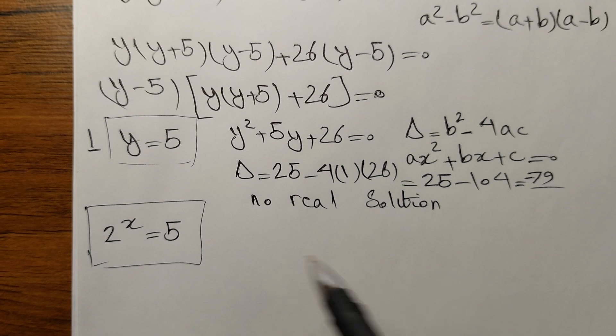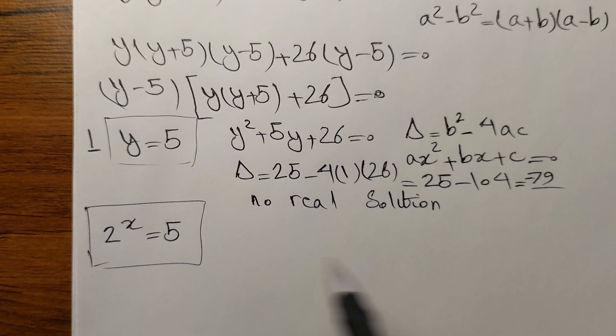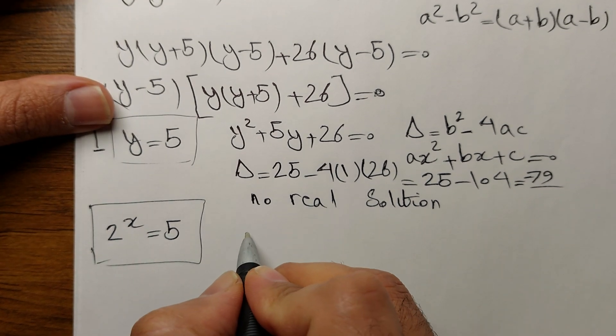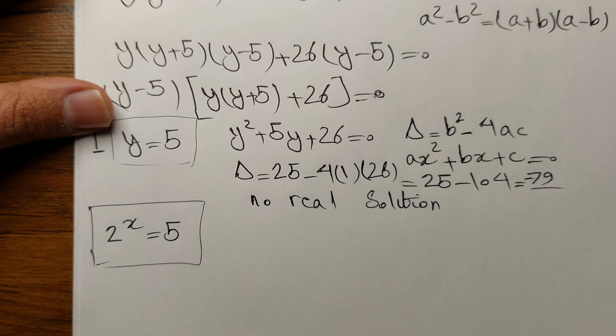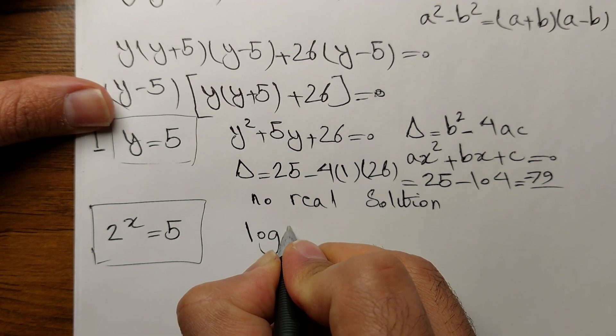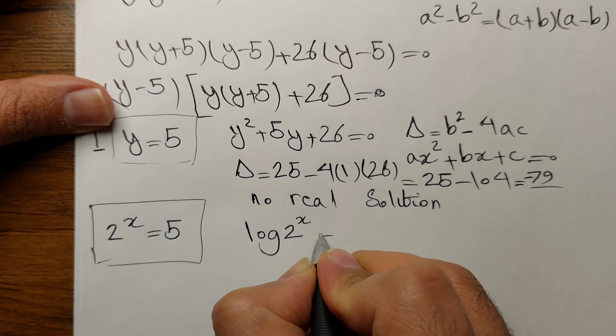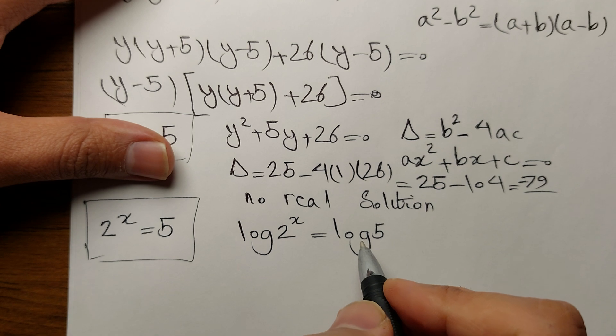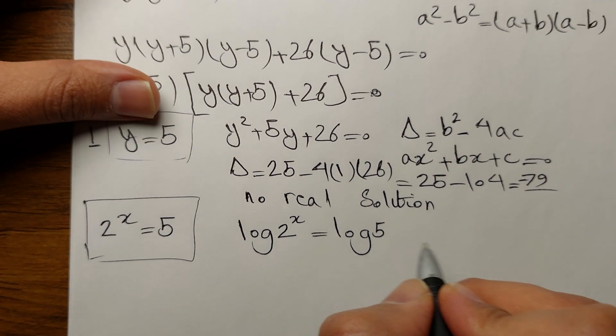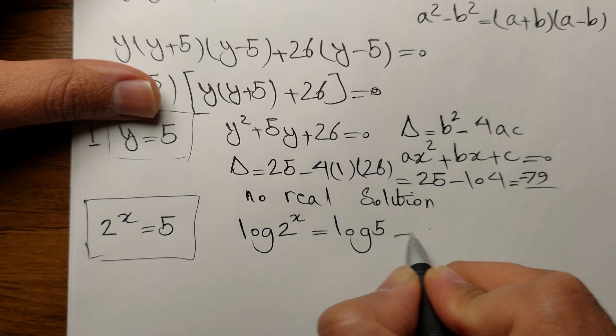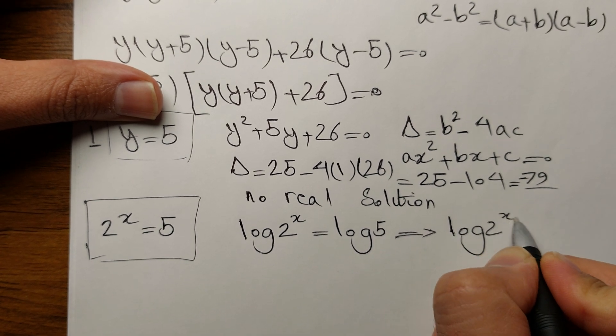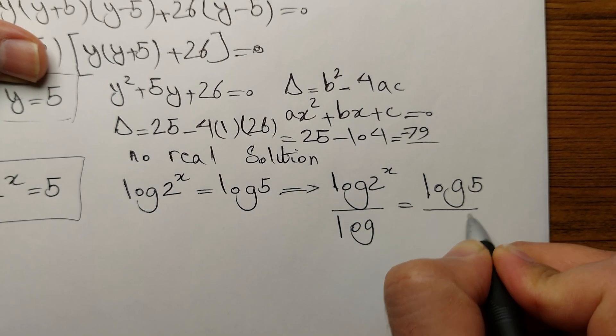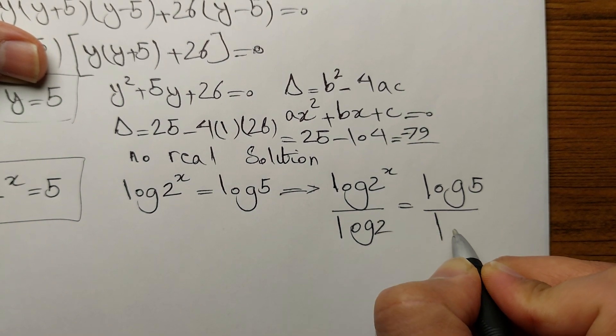Of course, there is a very instant solution at this point. More advanced students can just say, okay, this is the solution in one line. But for those who prefer a step-by-step approach, let's take the log of both sides. log 2 to the power of x equals log 5. Now let's divide both sides by log of 2. So log 2 to the power of x over log 2 equals log 5 over log 2.